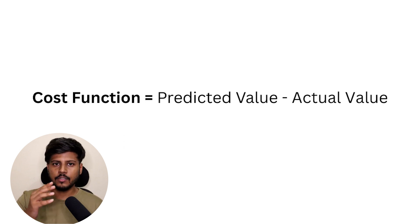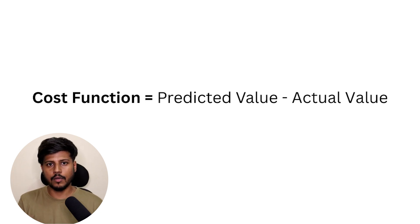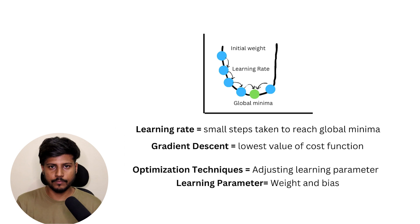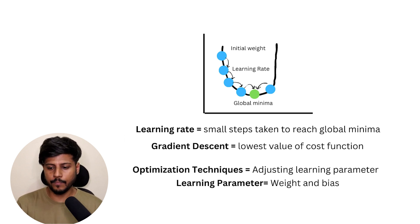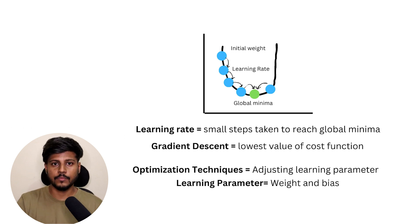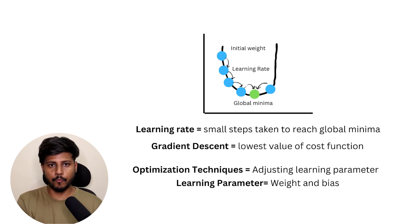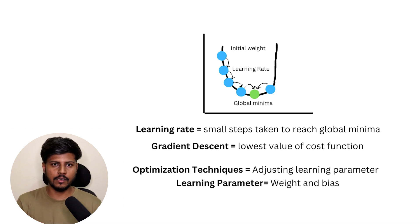The activation function introduces non-linearity into the neural network output. As you can see on my screen, there is a U-shaped graph — a perfect example of a non-linear graph. We put some random values to our weights and biases at some point on this graph, and we need to move to the local minima, where the cost function has a very low value and the predicted value is close to the actual value. To do that we use gradient descent, taking small steps known as the learning rate — sometimes bigger, sometimes smaller, adjusting accordingly.